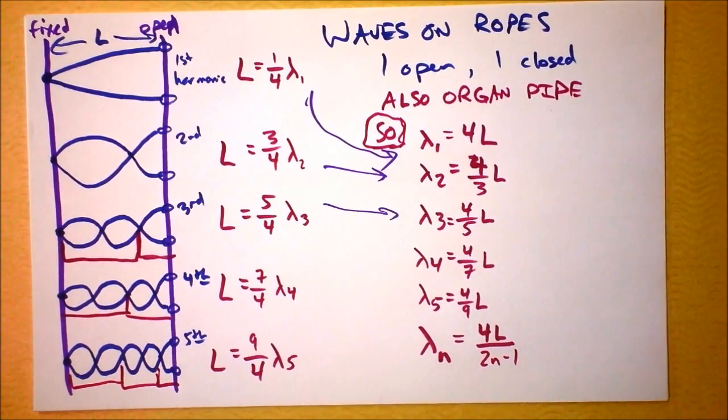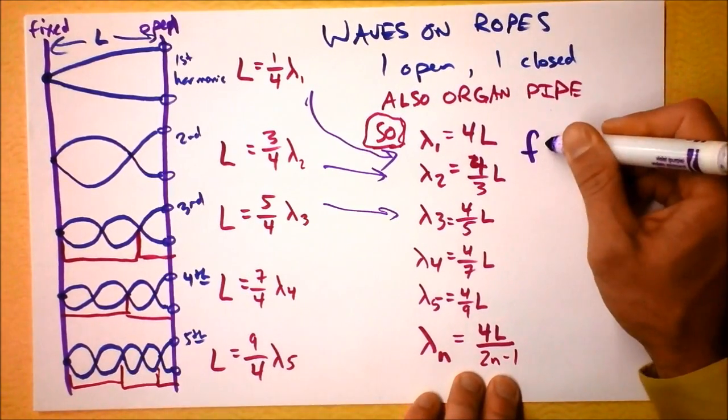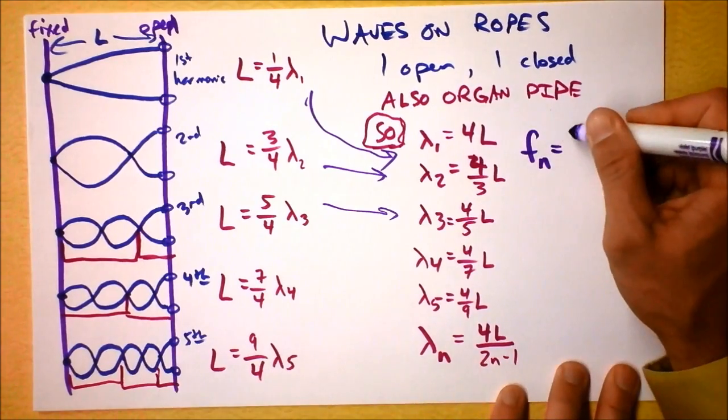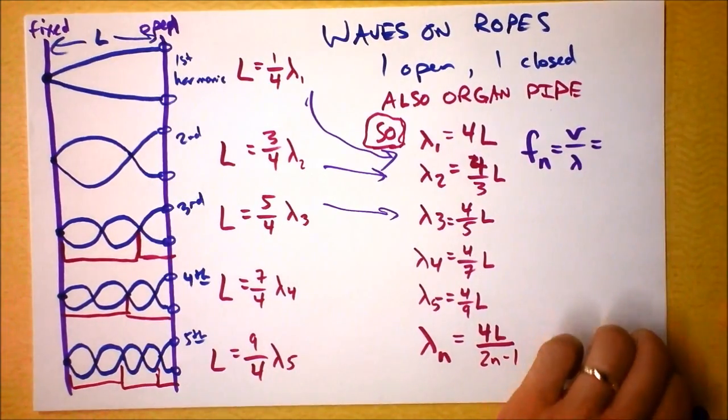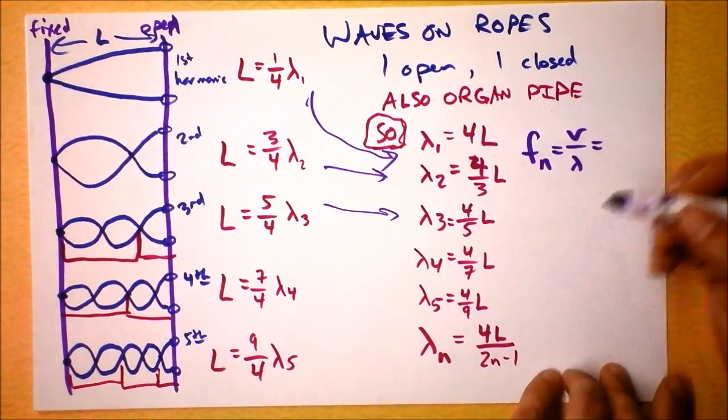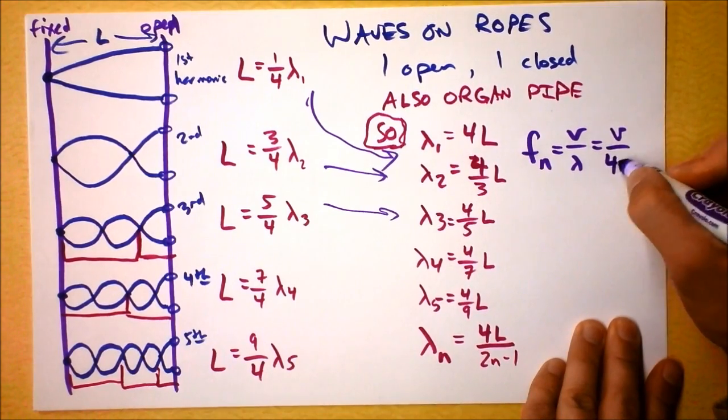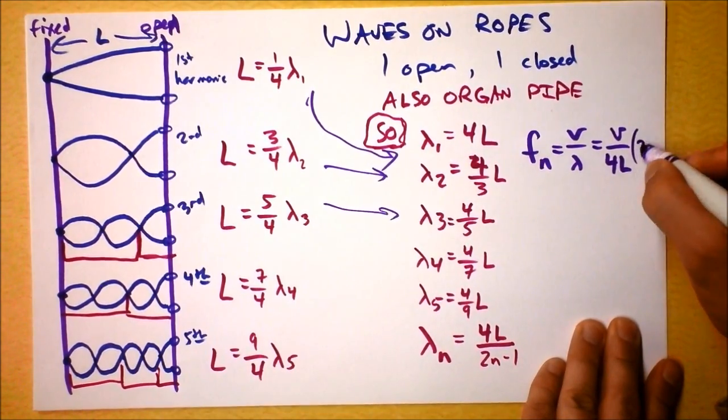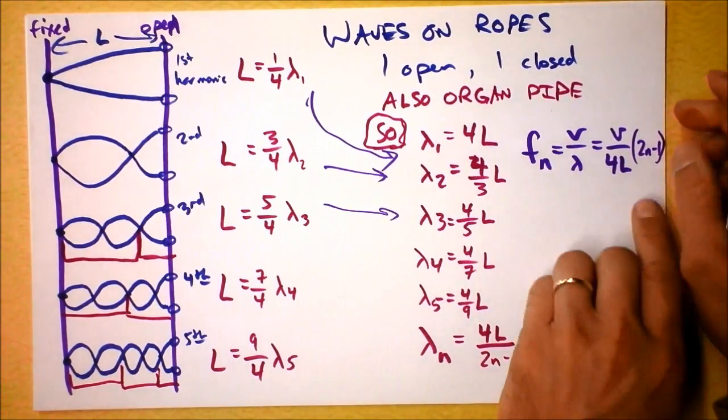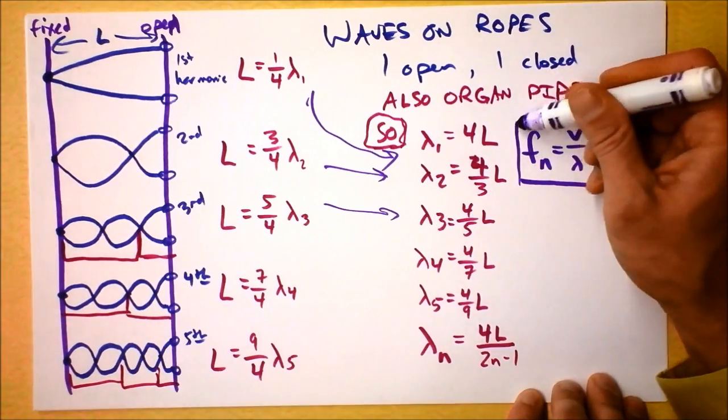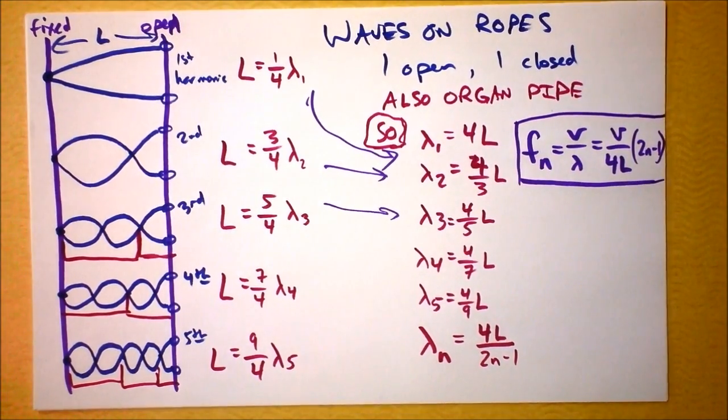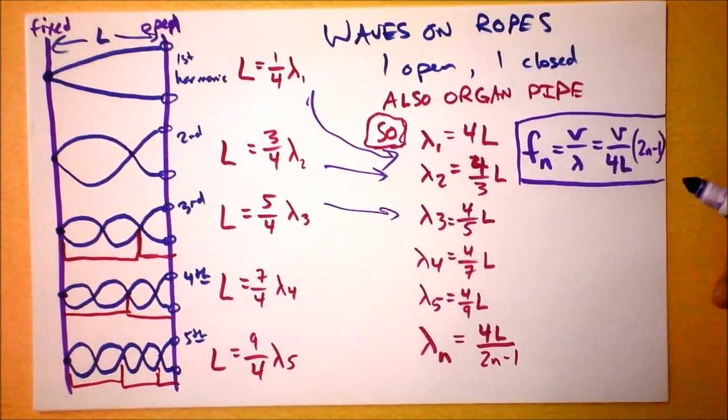So what I need to do beyond that is investigate what that frequency might be. F sub N, that's going to be V divided by lambda. So I'm just going to plug in this value for lambda here. V divided by four times L, and then I have to multiply by two N minus one. This is the frequency that would be given if one end of a pipe is open. I'm going to leave as an exercise for you. I think you're getting a little bit better at these things. I'd like you to try this challenge.